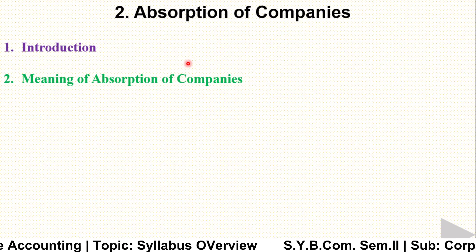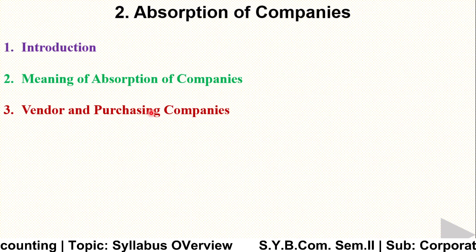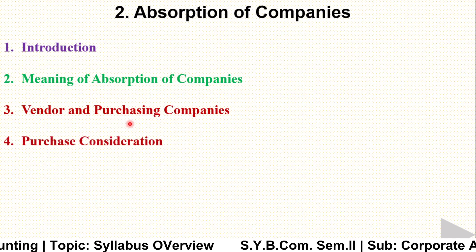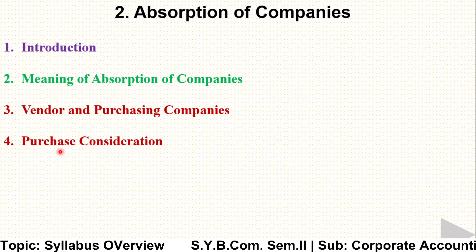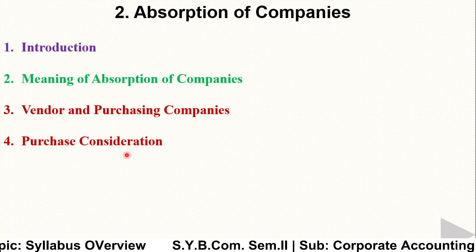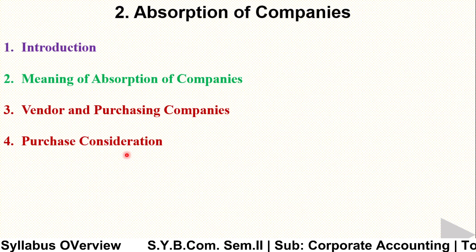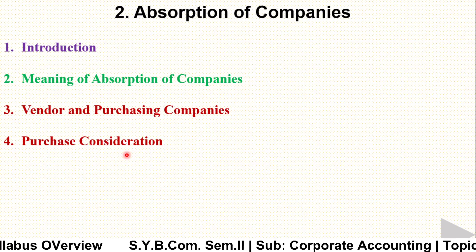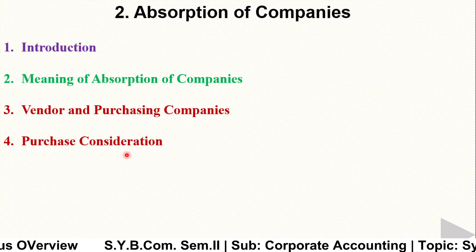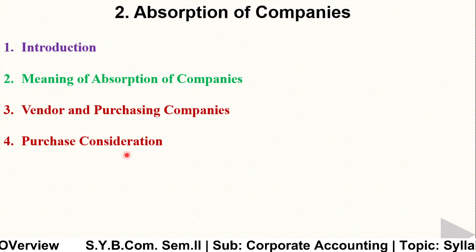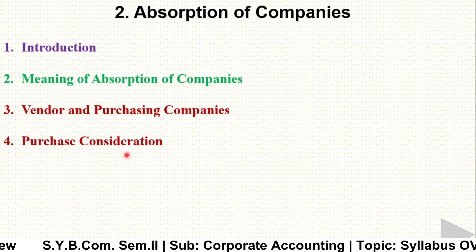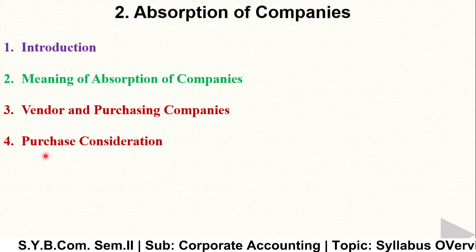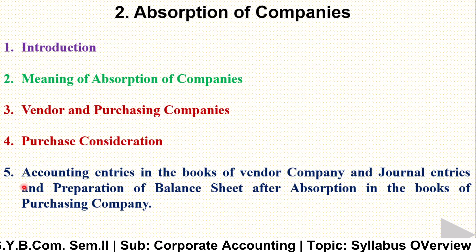The second chapter is Absorption of Companies, where we study the introduction and meaning of absorption, and the roles of vendor and purchasing companies. We study how one company absorbs another, and how to calculate the purchase consideration — the amount paid by the purchasing company to the vendor company. It may be a lump sum or calculated as assets minus liabilities.